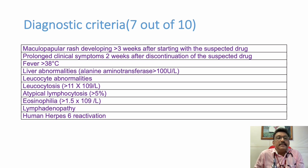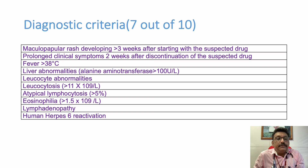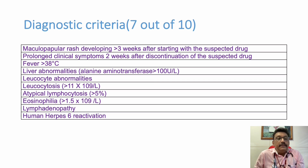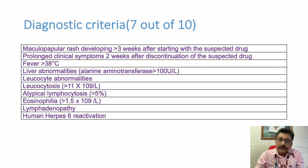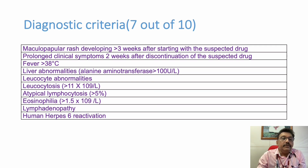The diagnostic criteria require seven out of ten to be positive: maculopapular rash developing more than three weeks after starting the suspected drug; prolonged clinical symptoms two weeks after drug discontinuation; fever more than 38°C; liver abnormalities with AST/ALT above 100 units per liter; elevated WBC above 11,000; atypical lymphocytosis more than 5%; lymphadenopathy; and human herpes 6 reactivation.